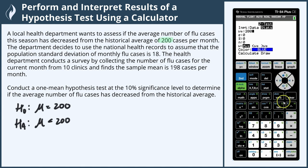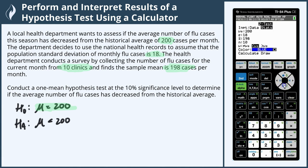We know that the population mean is 200, the standard deviation is 18, and we have a sample mean of 198, which came from 10 clinics. Since we want to know if it decreased, we're going to select less than, then calculate, and here we have our results.